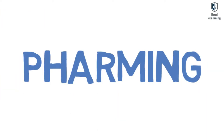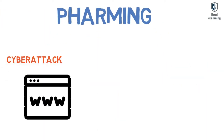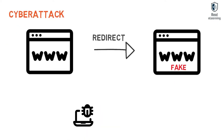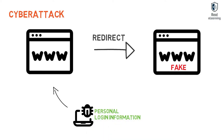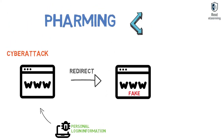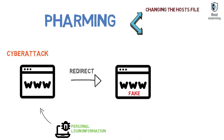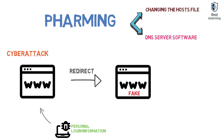Pharming is a cyberattack intended to redirect a website's traffic to another fake site by installing a malicious program on the computer or asking for personal login information. Pharming can be conducted either by changing the host's file on a victim's computer or by exploitation of a vulnerability in DNS server software.